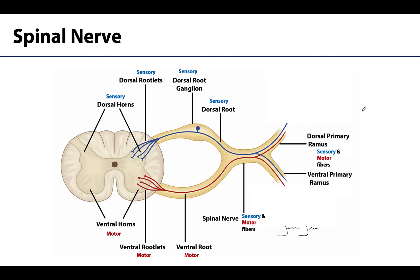A spinal nerve is a bit more complex than just popping out of the side of the spinal cord and heading to a destination. There are rootlets and rami and all kinds of things we need to work through together. So let's start proximally towards the spinal cord and work our way towards these nerve branches over here.